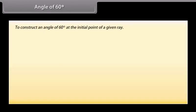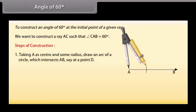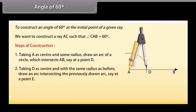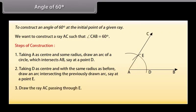Angle of 60 degrees. We know how to construct 30 degree and 45 degree angles. Now we will learn to construct an angle of 60 degrees at the initial point of a given ray. Let us take a ray AB with initial point A. We want to construct a ray AC such that angle CAB equals 60 degrees. Steps of construction: Taking A as center and some radius, draw an arc of a circle which intersects AB, say at point D. Taking D as center and with the same radius, draw an arc intersecting the previously drawn arc at point E. Draw the ray AC passing through E. Then angle CAB is the required angle of 60 degrees.